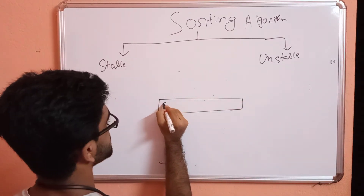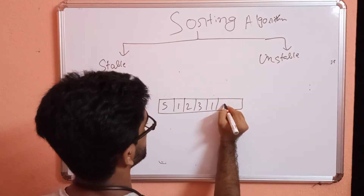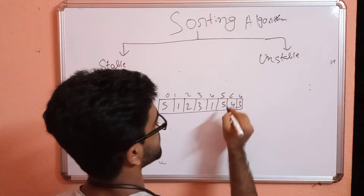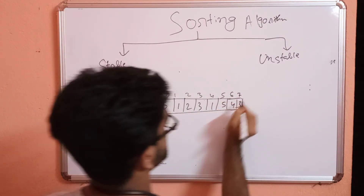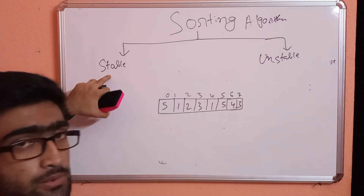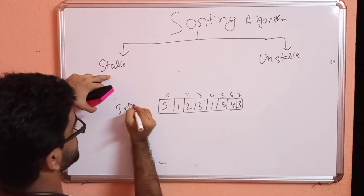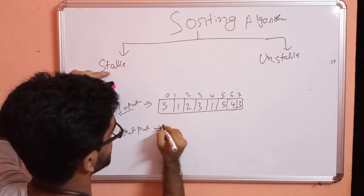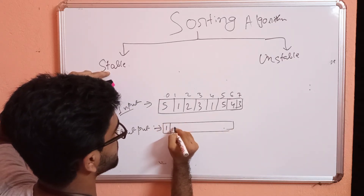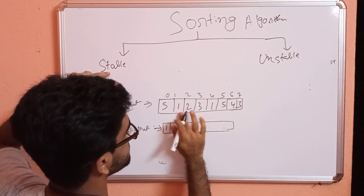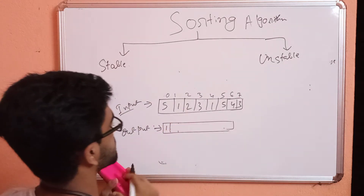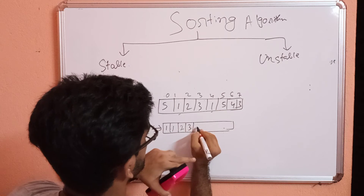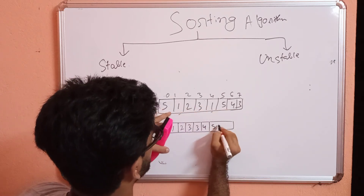Suppose this is an array of elements: 5, 1, 2, 3, 1, 5, 4, 3. This is the input. When a stable sorting algorithm is applied, the output will be: 1, 1, 2, 3, 3, 4, 5, 5 — sorted in ascending order.